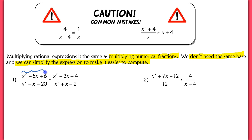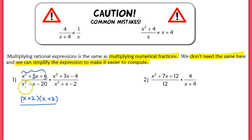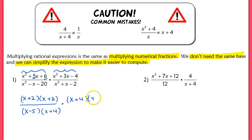In the first expression, the numerator factors as x plus 2 times x plus 3. Be careful not to write it as x plus 6 and x plus 1 — the 5 and the 6 always trips up students. In the denominator, we have x minus 5 times x plus 4. In the other fraction, the quadratic factors as x plus 4 times x minus 1, and x squared plus x minus 2 factors into x plus 2 times x minus 1.